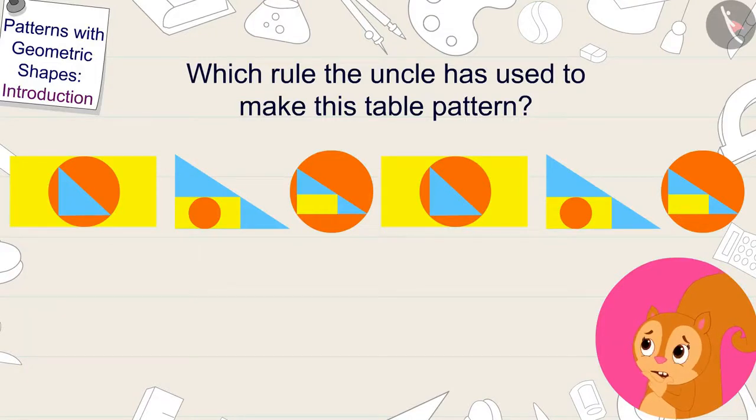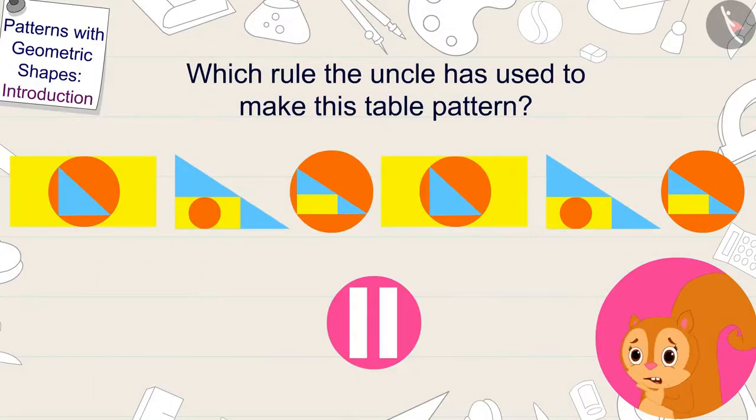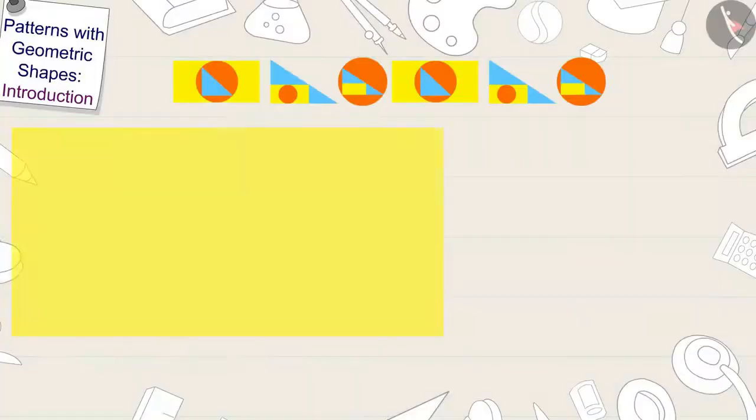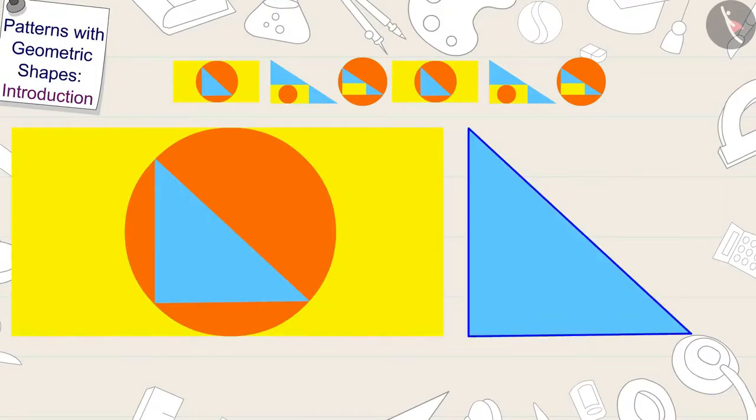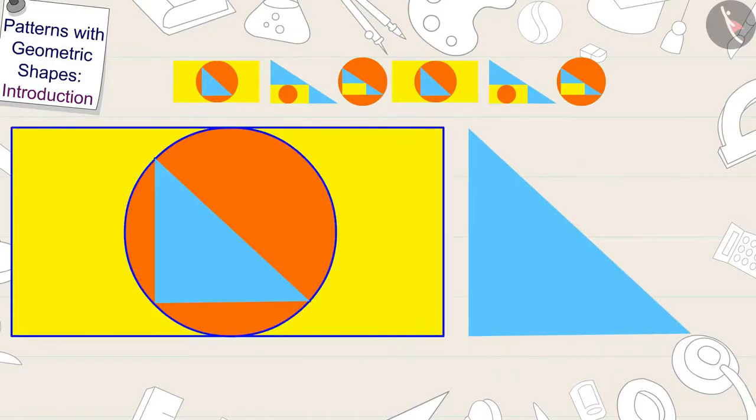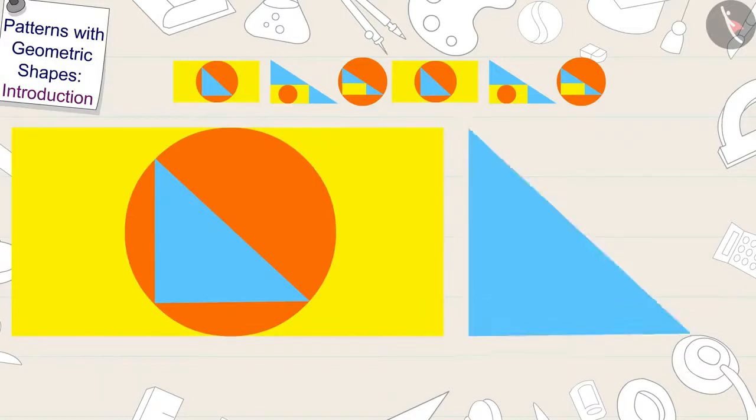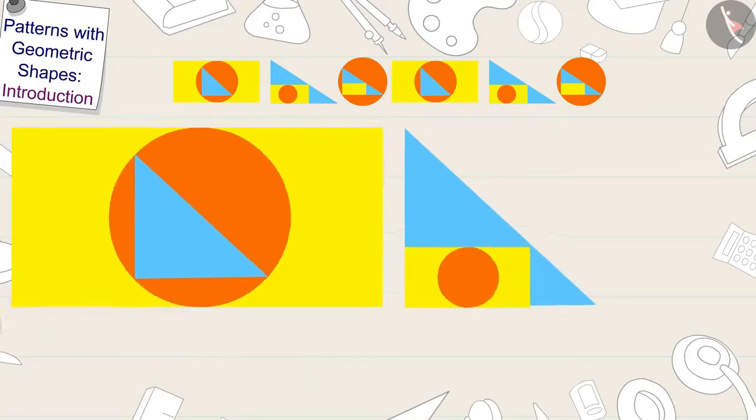To make this pattern, each time uncle made the inside of the previous mark as the outermost of the next mark and then made the remaining two shapes in that shape inside this shape according to the order made in the previous mark. By repeating this rule again and again uncle has patterned his table.